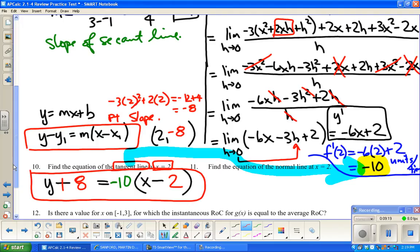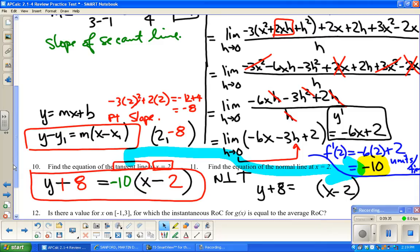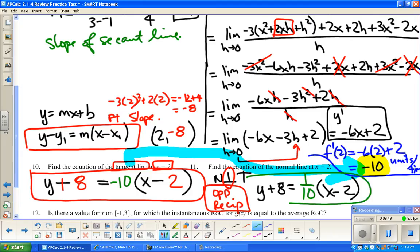Next up, find the equation of the normal line. Well, a normal line is perpendicular to the tangent line. So it's going to go through the same point. So I can say y plus 8 equals mystery slope x minus 2. And to be perpendicular, slopes have to be opposite and reciprocal. Well, the opposite of negative 10 is 10. The reciprocal of 10 is 1 tenth. So there it is.